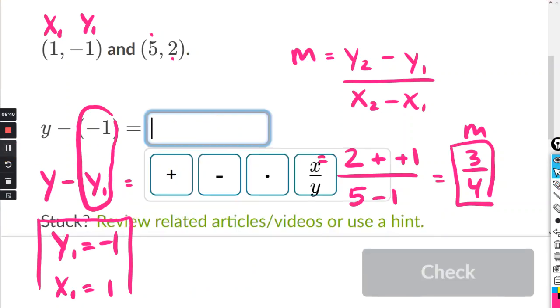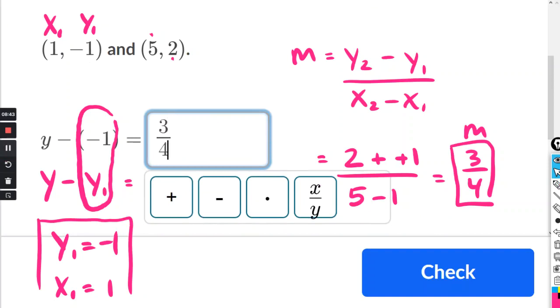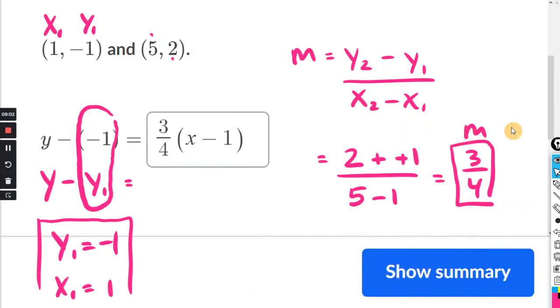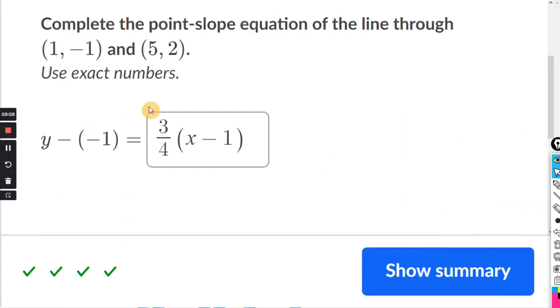Click in the box. 3 slash 4 gives me 3 fourths. Click the right arrow key to bring it back up and use the parentheses and just type x minus 1. It closes the parentheses for you. So that's it. 3 fourths times x minus 1. So that's basically it. You find the slope and it goes right here. And then you use this part of the equation to determine which of the two points you're plugging in.